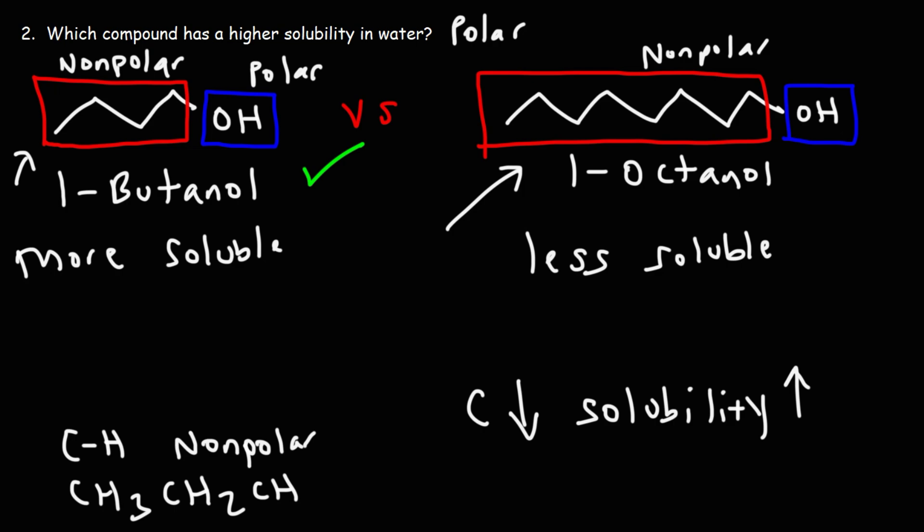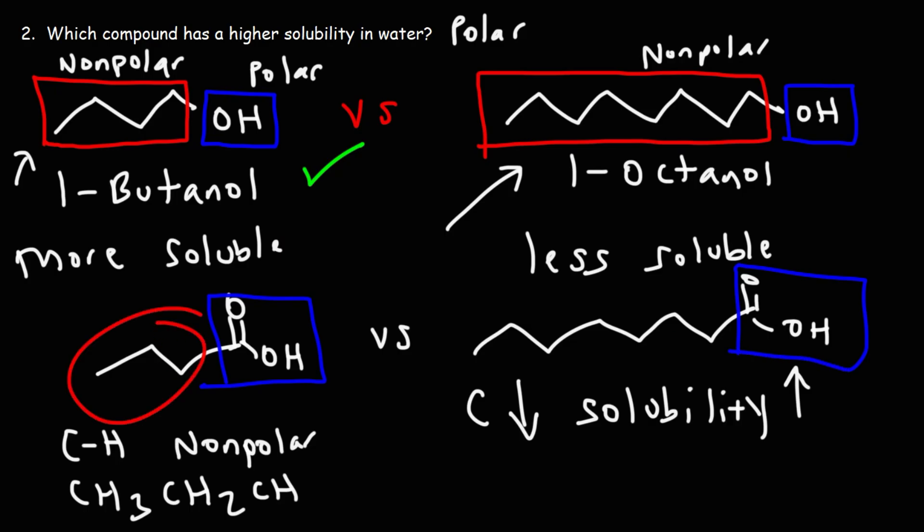So another good example would be butanoic acid versus octanoic acid. They have the same functional group, that is, a carboxylic acid, but butanoic acid has less carbon atoms. So therefore, it's going to have a higher solubility in water than octanoic acid. So if the functional group is the same, the organic compound with less carbon atoms typically has a higher solubility in water.